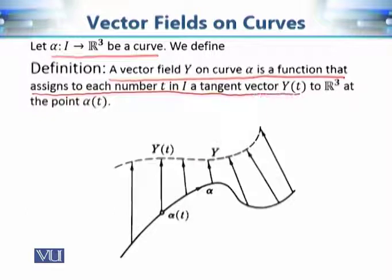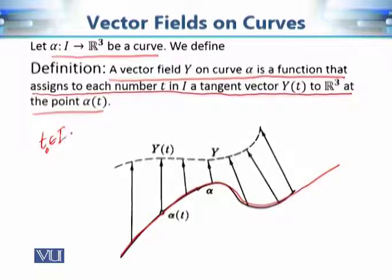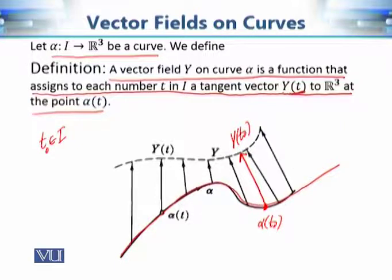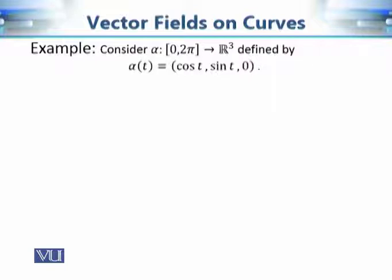A vector field on a curve alpha is a function that assigns to each number t in I a tangent vector y(t) to R3 at point alpha(t). So if we take any parameter value t₀, then alpha(t₀) is some point on the curve, and at this point y gives us a vector y(t₀). As you change the value of the parameter, these vectors are going to be different, so y is a function of the parameter t.